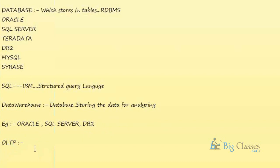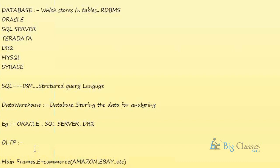Examples of OLTP applications include: a mainframe application handling daily customer operations, e-commerce applications like Amazon and eBay, and point-of-sale systems like Walmart where agents enter details to generate an invoice.